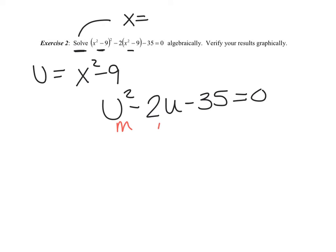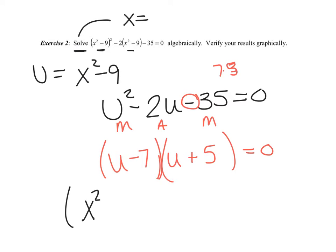I'm saying MAM, multiply, add, multiply. I know I've got u and u. Let's see, I'm going 7 and 5, and I know my signs are different, and I need a negative 2. So, hopefully, you're saying negative 7, plus 5, equals 0. You're not done because the equation wasn't that simple. We have to substitute that u back in. So, now I've got x squared minus 9 minus 7, and x squared minus 9 plus 5 equals 0.